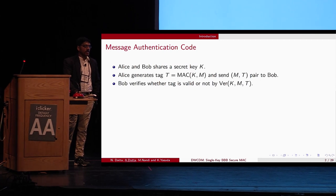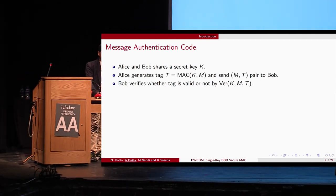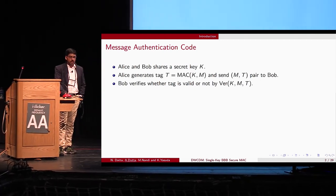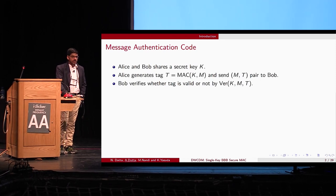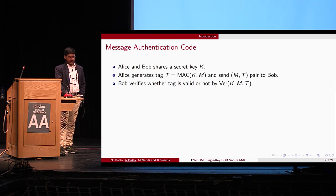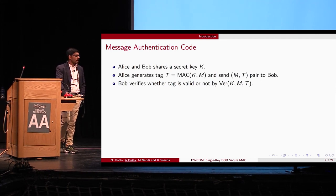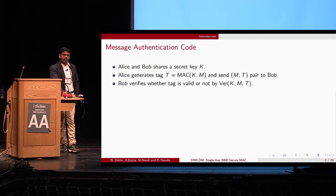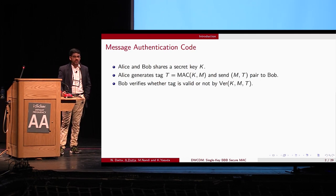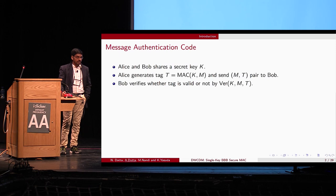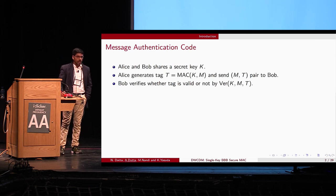Informally, a message authentication code, or MAC, is a symmetric key algorithm that ensures the integrity of a message. If Alice wants to send a message to Bob and they do not care about confidentiality but about integrity, then Alice and Bob first share a secret key K through some secure key exchange protocol. Alice applies the MAC algorithm on K and message M to generate tag T, and sends the message-tag pair to Bob.